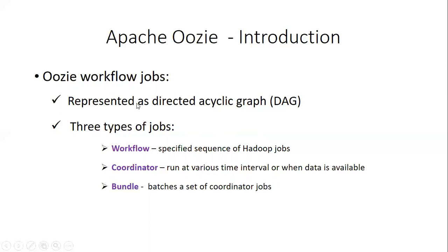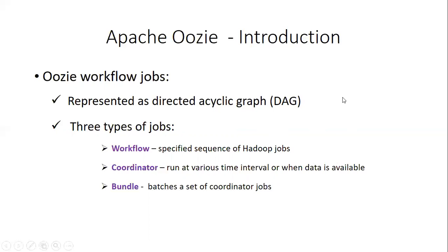Oozie workflow jobs are represented as a directed acyclic graph, in short called a DAG — a DAG of actions. There will be a set of actions or jobs, and the interdependency between the jobs will be defined in this graph. Directed acyclic graph is an inbuilt process in the Oozie structure used by the program to define the actions. In the DAG process of Oozie, the acyclic term means no loop — the action graph has a separate start point and end point, there is no cycle.